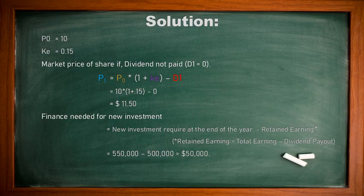So 500,000 is our total earning, and this 500,000 is our retained earning. Now we will put this in the formula. New investment required is $550,000 and retained earning in this situation is $500,000. So we need $50,000 from the market as new investment.